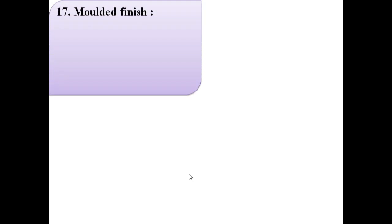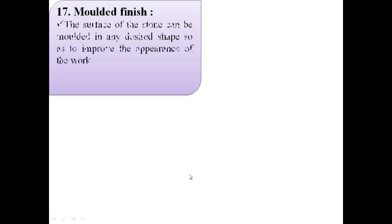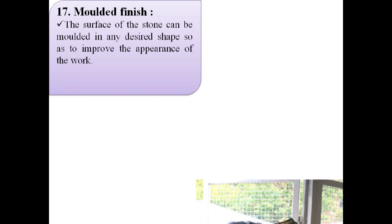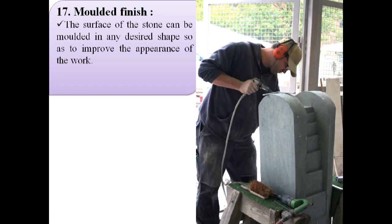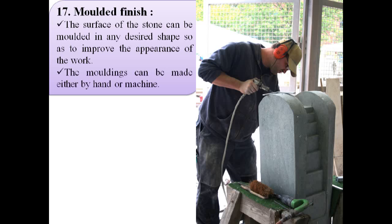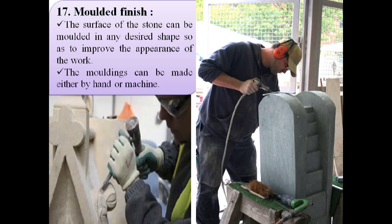The next finish is molded finish. The surface of the stone can be molded in any desired shape so as to improve the appearance of the work. The moldings can be made either by hand or machine. The first image shows molded finish by using hand, and the second image shows molded finish by using machine.